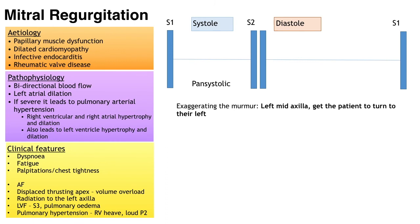A patient will complain of dyspnea on exertion, peripheral oedema, palpitations and fatigue; acute presentation is similar to aortic regurgitation. On examination you might feel atrial fibrillation and a displaced thrusting apex due to volume overload. On auscultation you will hear a pansystolic murmur radiating to the left axilla. There might be left ventricular failure with an S3 added heart sound or pulmonary oedema as basal crackles. There might also be pulmonary hypertension causing a right ventricular heave or loud P2.